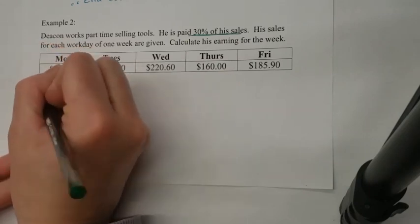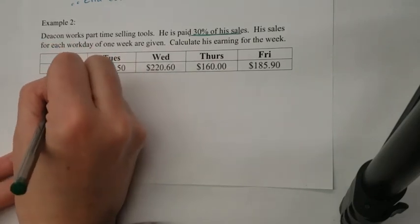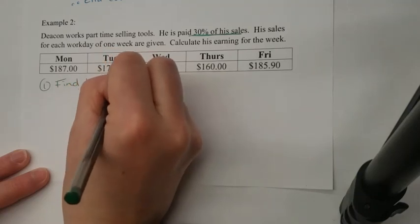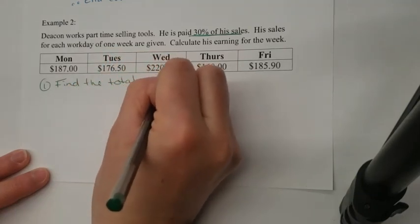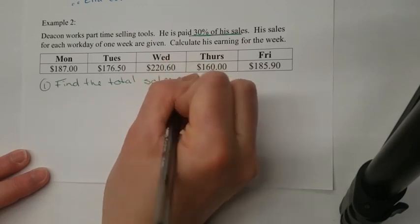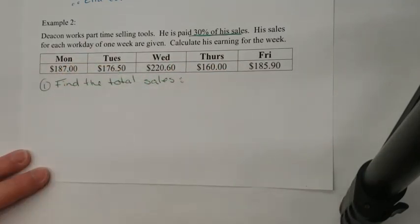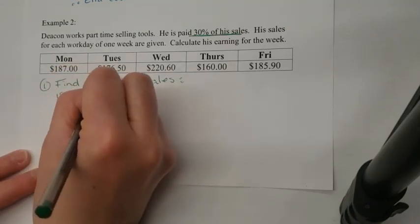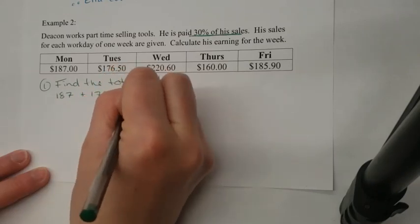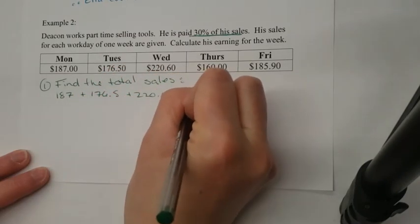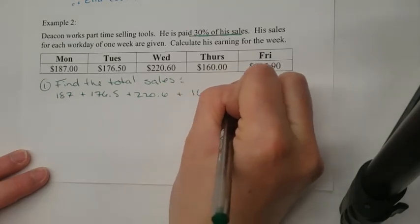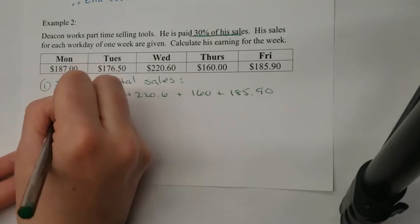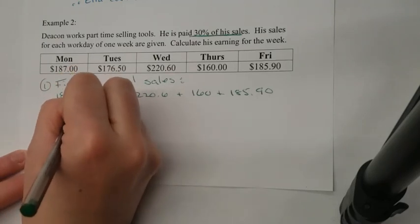The first thing we need to do is calculate his total sales. To do that, you just add all the numbers to find out how much he actually earned in sales. So it's $187 plus $176.50 plus $220.60 plus $160 plus $185.90. When you add all those numbers together, you get $930.